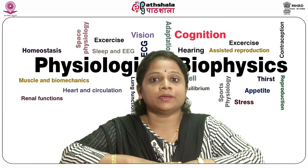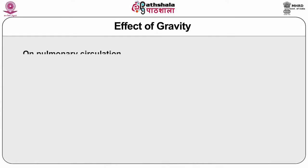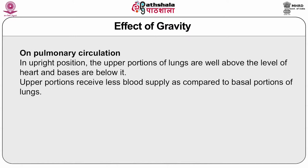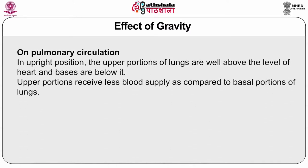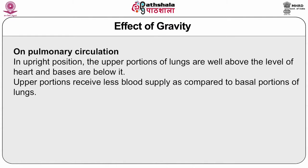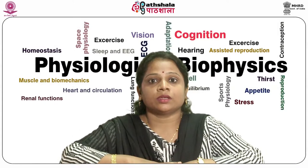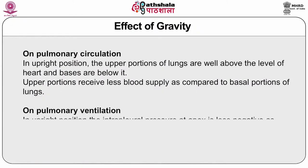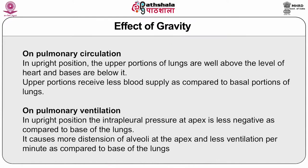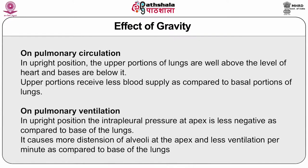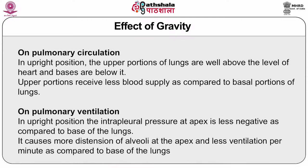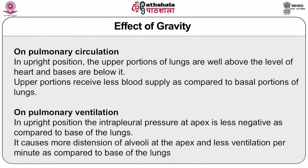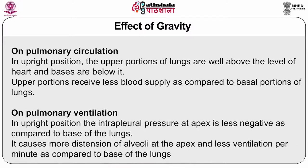Gravity has its effect on pulmonary circulation. In the upright position, the upper portions of the lungs are well above the level of the heart and the bases are below it, so upper portions receive less blood supply compared to the basal portions. Gravity also has an effect on pulmonary ventilation. In the upright position, intrapleural pressure at the apex is less negative compared to the base of the lungs, leading to more distension of alveoli at the apex and less ventilation per minute compared to the bases.